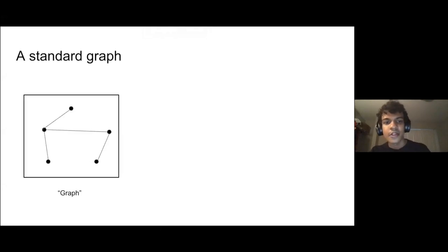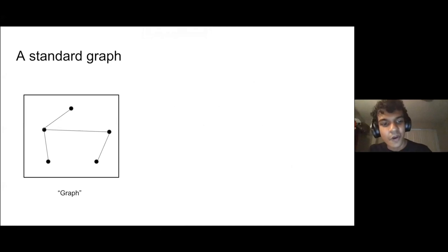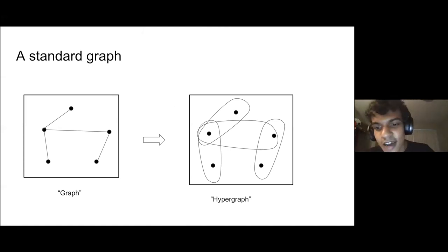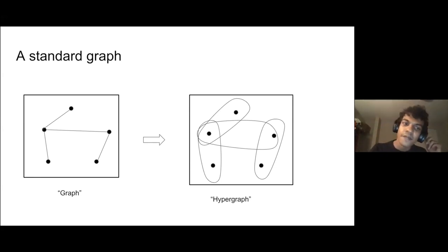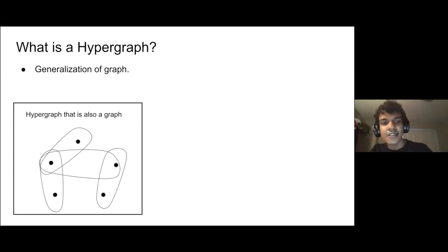Thanks Ravi. This is work that I did with Yu Chen and Sanjeev Khanna on this really cool problem called hypergraph cut sparsification. Hopefully everyone has seen something like this before — it's a graph. We can try to represent this graph in a slightly different way. Instead of drawing a line between two vertices of an edge, maybe we can draw a curve that encloses these two vertices. This is actually an example of something we call a hypergraph.